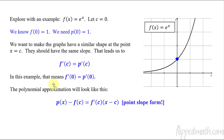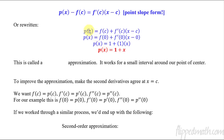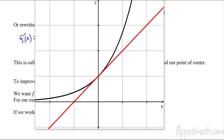Don't worry — it's a lot simpler than it looks. This is just point-slope form: y minus y1 equals m times x minus x1. We figure out f of c, then solve for p of x. Plugging in the zeros to all the c's, f of 0 equals 1. And f prime of x is also equal to e to the x, so f prime of 0 is also 1. That simplifies all the way down to p of x equals 1 plus x. Let's look at the graph: there's the original and there's my line — it's just a tangent line, which we've been doing since unit 2.